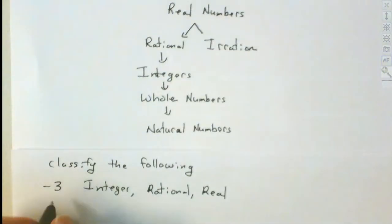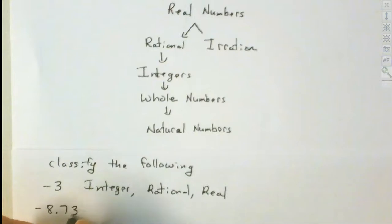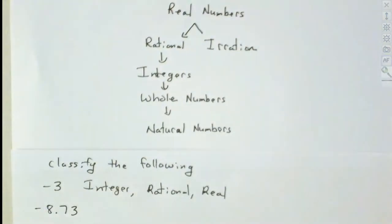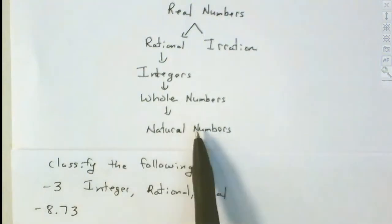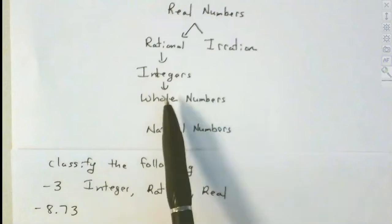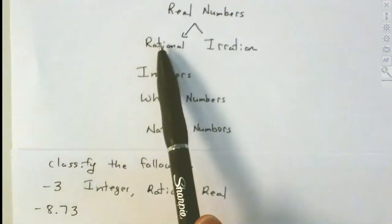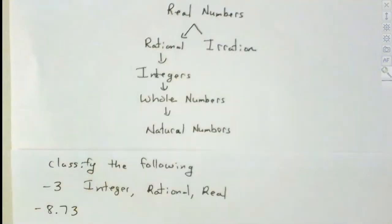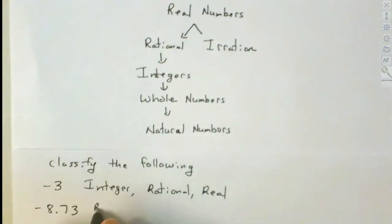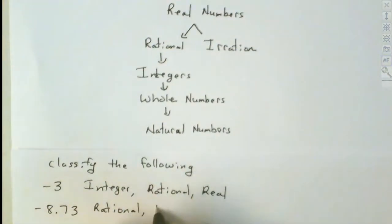What about minus 8.73? Rational or irrational? We know it's rational because it's a decimal that stops. Is it a natural number? No. Whole number? No. Is it an integer? No. But it is rational, and what else? Real. So it's rational and it's also real.